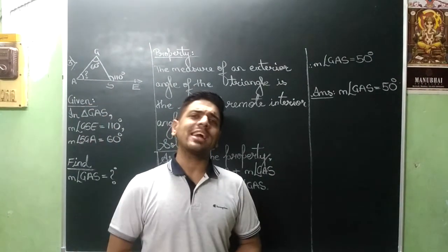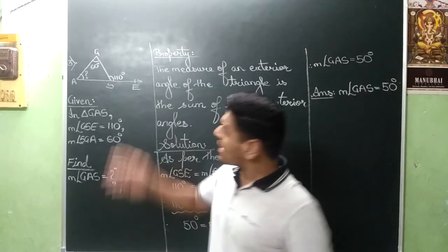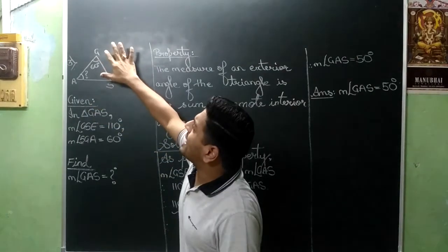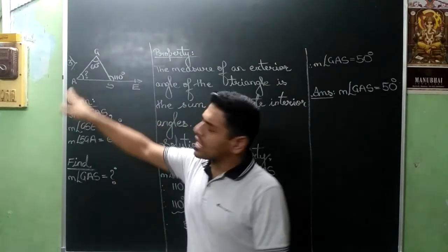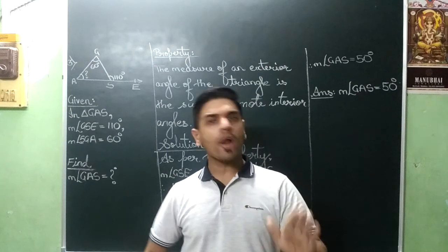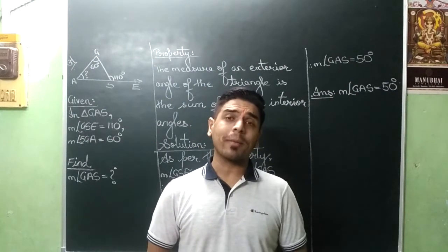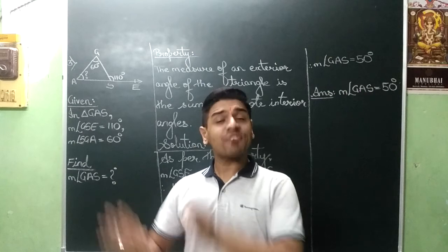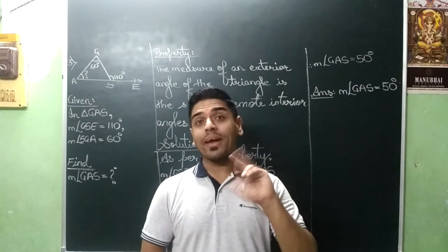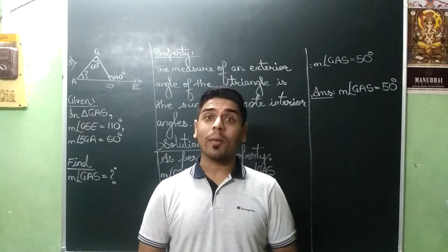So as you did the previous sum, this was similar. The only difference is in the previous one we found the measure at the top. In this one the lower corner angle. Now ahead of this there is one more sum where only the exterior angle is given and the remaining two remote interior angles we have to find.